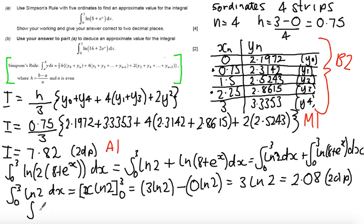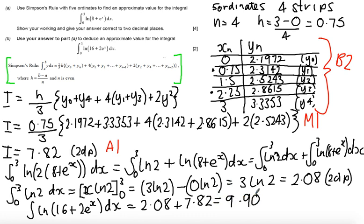So then, we can approximate the integral of log(16 plus 2e to the x) dx as 2.08 plus the value of the integral that I worked out before, so that's plus the 7.82, and this will become equal to 9.90, correct to 2 decimal places.